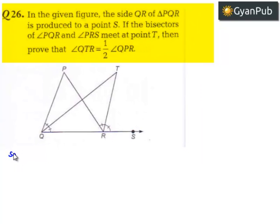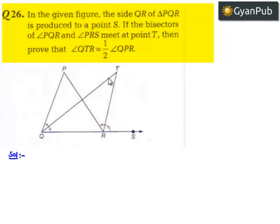Now moving on to the solution. Triangle PQR is given such that QR is extended to S, and the bisector of angle PQR is intersecting the bisector of angle PRS at T. We are asked to prove that angle QTR is equal to half times angle QPR.